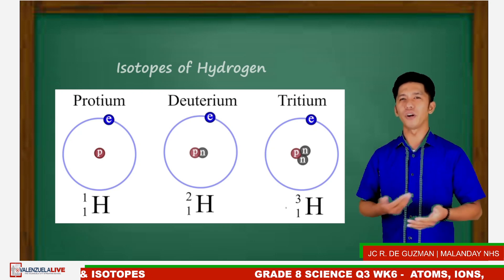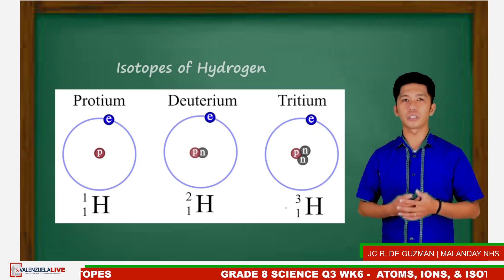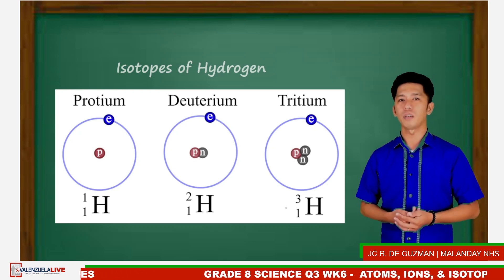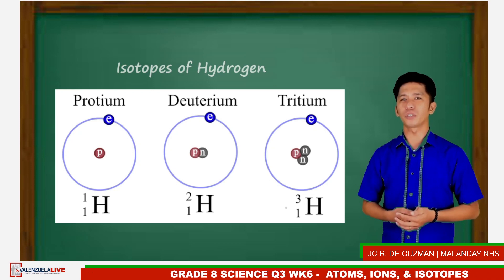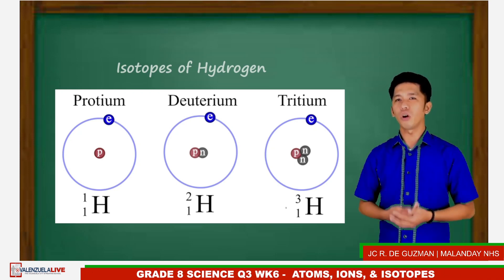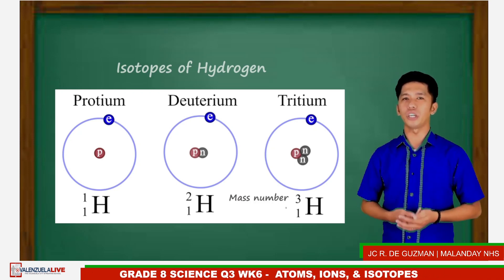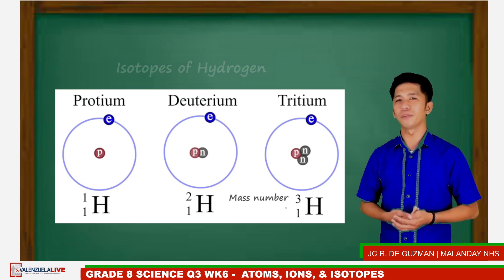As you have noticed, their protons are still the same. It's just the number of neutrons that change, which also leads to the change in the mass number of an atom.